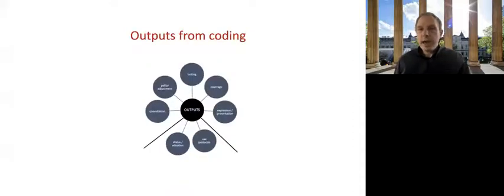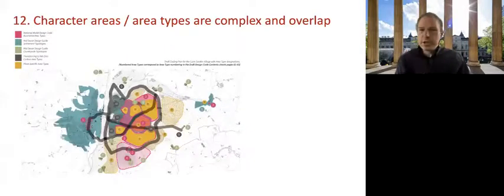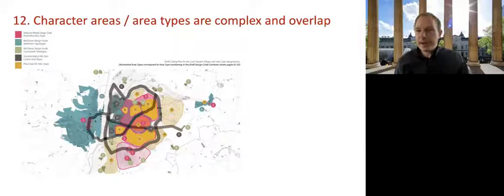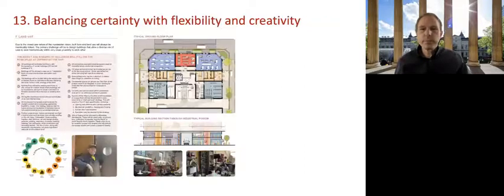Turning now to the outputs from coding, these issues span the content of codes to how they are expressed. First, returning to area types or at a smaller scale character areas. Now, to be useful, analysis needs to reflect the fine grained complexity variation and constraints that characterize many, well, any urban area. This means that area types may overlap and mix and so rather than seeing them as self-defined and bounded entities, more sophisticated approaches may be required to capture the different overlapping layers of character.